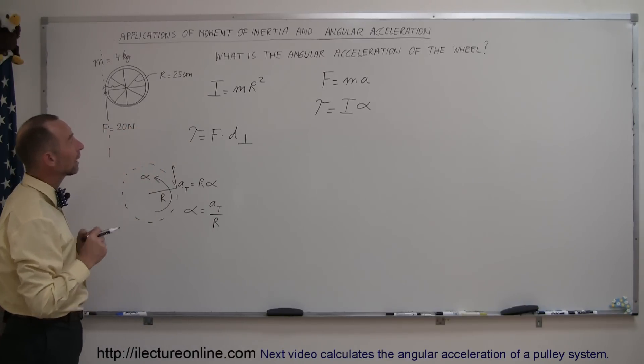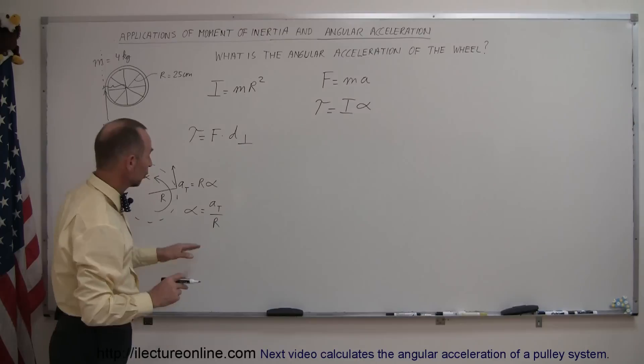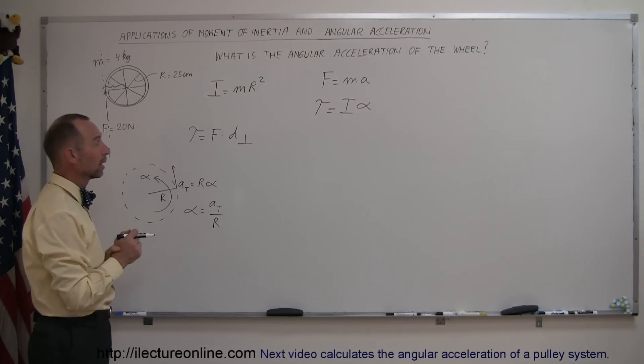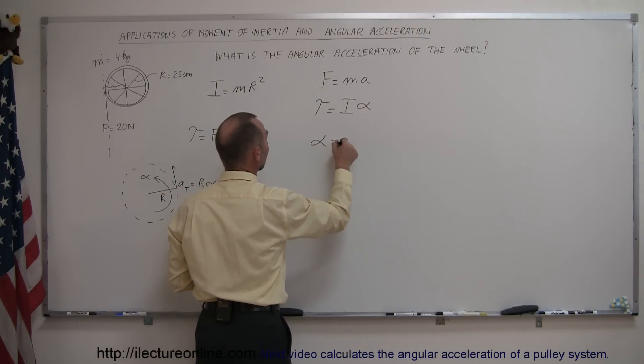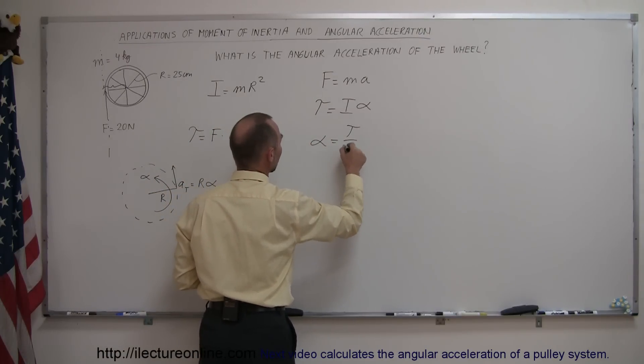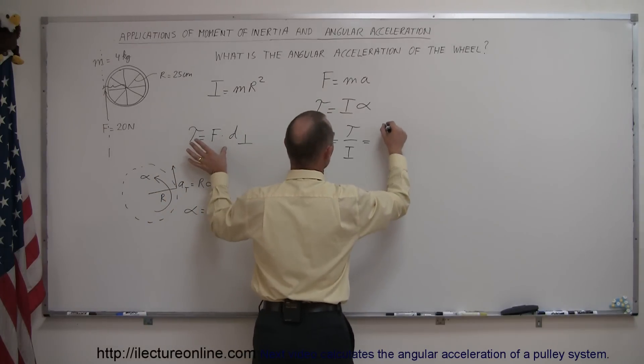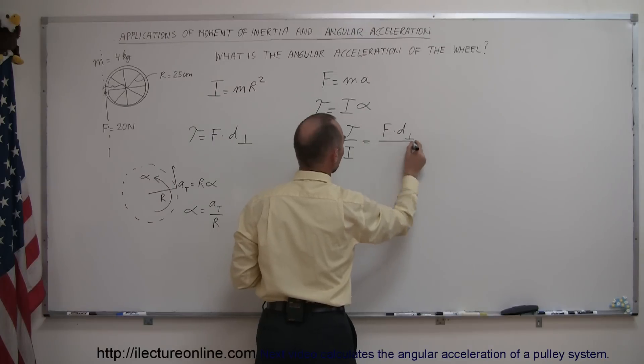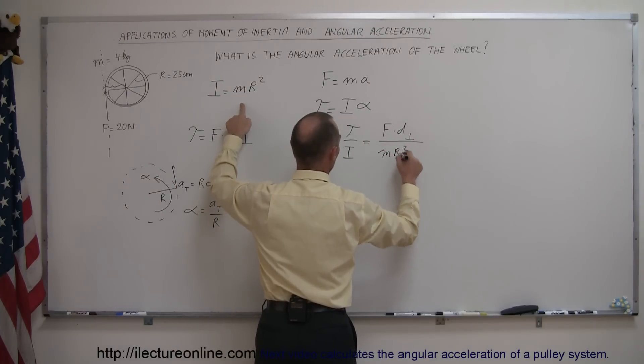So if we want to know the angular acceleration of the wheel, we can solve for alpha. If you want to know the tangential acceleration of the wheel, then we have to make this replacement right here. But since they're only asking us to find the angular acceleration, we can say that alpha is equal to the torque divided by the moment of inertia, and the torque in this case is the force times the perpendicular distance from the line of action of force to the point of rotation divided by the moment of inertia, which is mr squared.